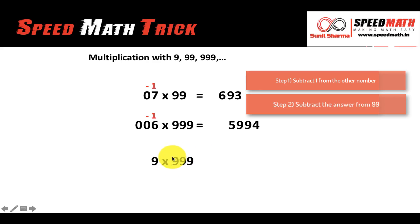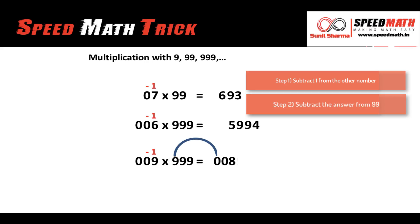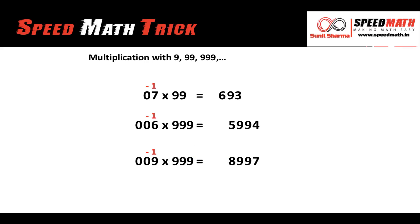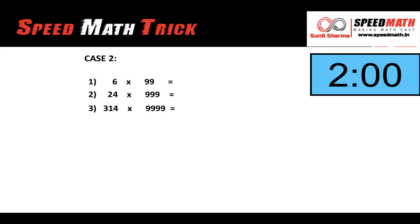Another example: 9 multiplied by 999. The number of digits in 999 is 3 and 9 has only one digit, so we place two zeros before it to get 009. Step 1: subtract 1 from 009 to get 008. Step 2: subtract 008 from 999 — 9 minus 0 is 9, 9 minus 0 is 9, and 9 minus 8 is 1. So 9 times 999 equals 8991.